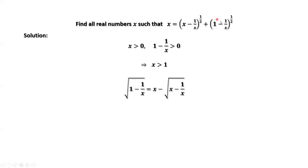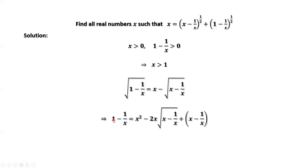Rewrite the given equation into a new form. The square root of (x minus 1 over x) is on the left-hand side, and x is moved to the right-hand side. Taking squares on both sides of this equation, we have 1 minus 1 over x equals x squared minus 2 times x times the square root of (x minus 1 over x), plus the last term squared, which is x minus 1 over x.